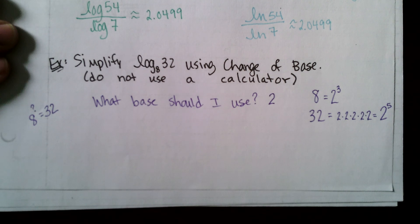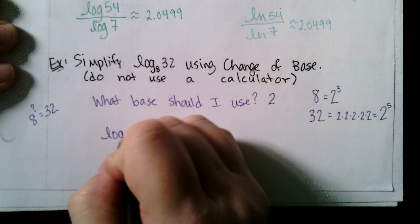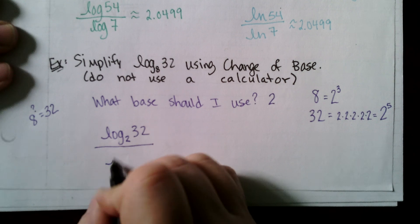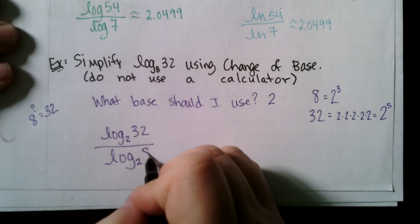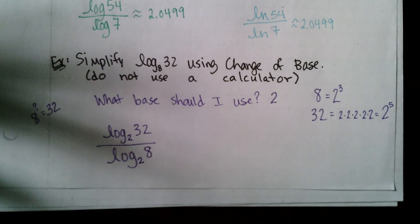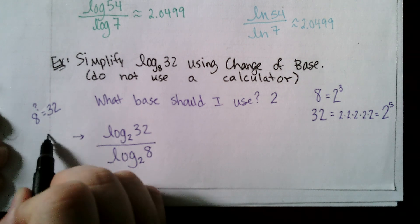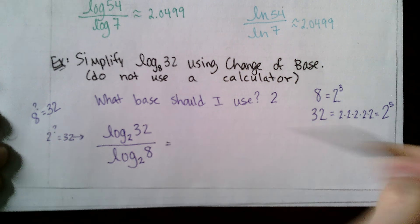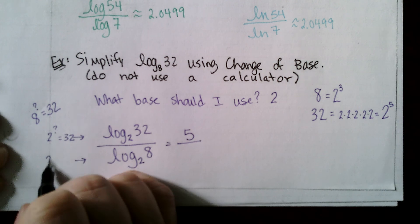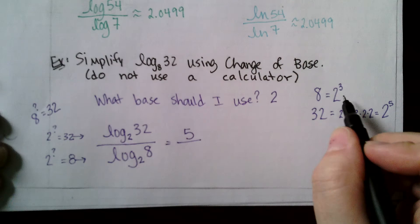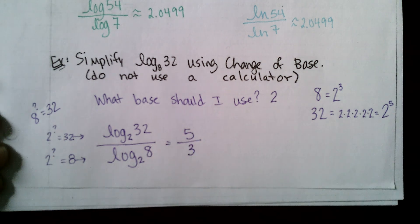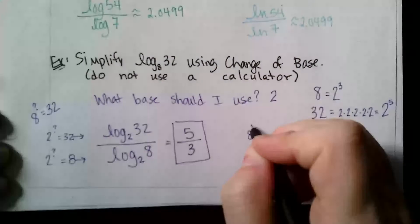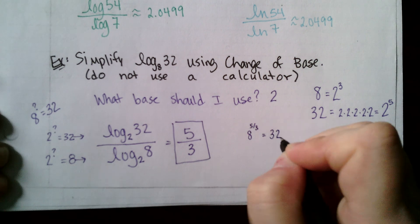I'll rewrite log base 8 of 32 as log base 2 of 32 divided by log base 2 of 8. The numerator asks: 2 to what power gives 32? That's 5. The denominator asks: 2 to what power gives 8? That's 3. So the answer is 5/3, meaning 8 raised to the power of 5/3 equals 32.